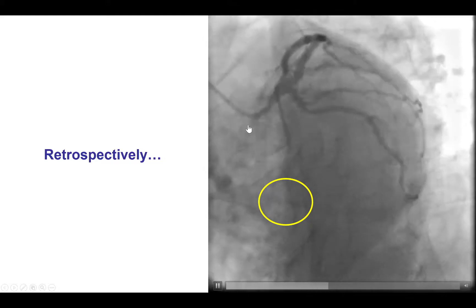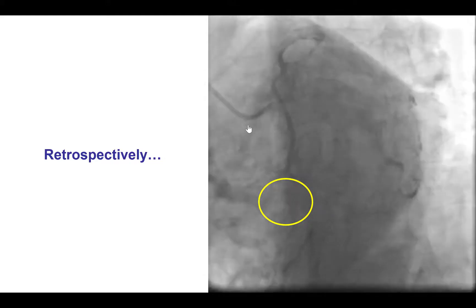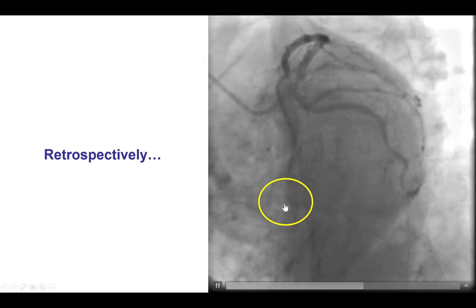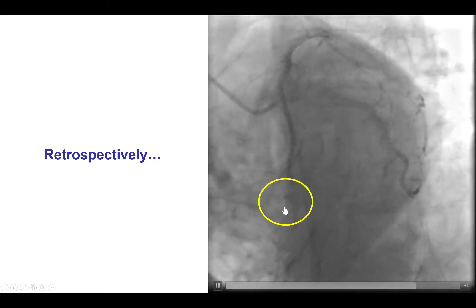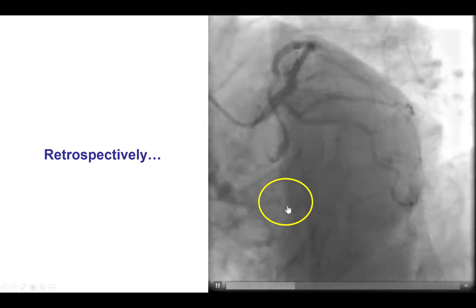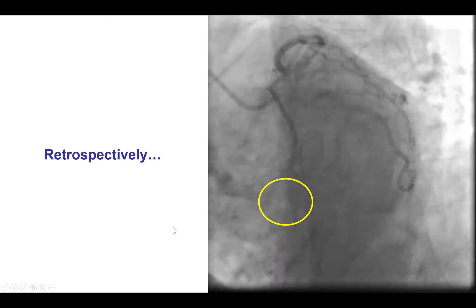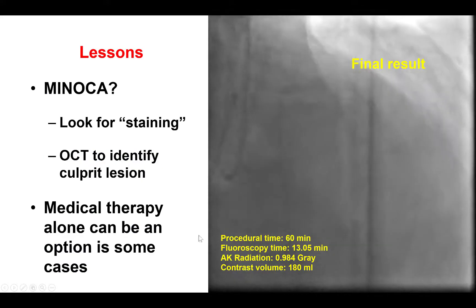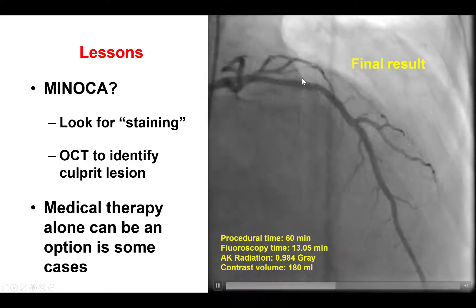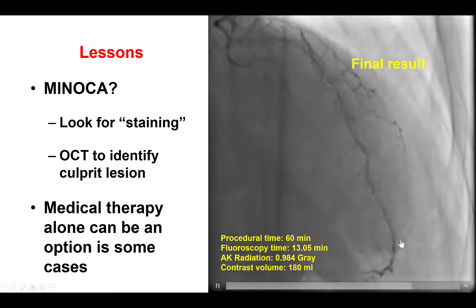The patient had a nice recovery. Retrospectively, there was an area of staining distally that most likely was due to distal embolization and staining of the thrombus with contrast. But in the end, the patient had an uneventful recovery with a nice final angiographic result.